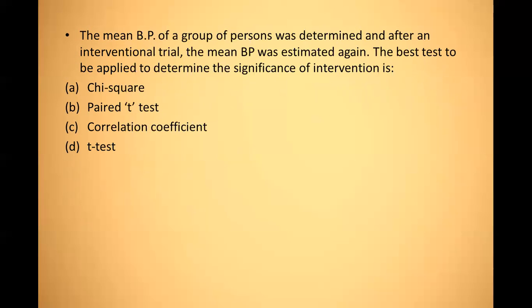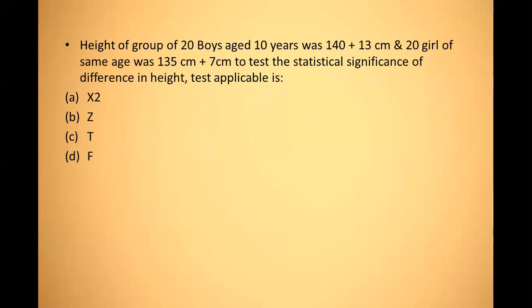Next question: the mean blood pressure of a group of persons was determined, and after an interventional trial the mean BP was estimated again. The best test to determine the significance of intervention — since it is the same group measured before and after, the best test is paired Student's t-test. Answer: B.